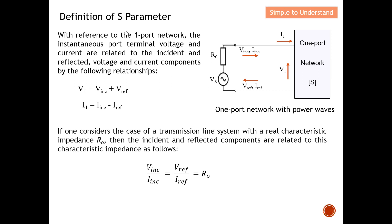Now we come to the one-port network. This diagram shows the one-port network with the instantaneous port terminate voltage and current. The terminate voltage and terminate current are related to the incident and reflected voltage and current components. The terminate voltage is simply the sum of the incident wave voltage plus the reflected wave voltage. For current, since the current flows in different directions, the terminate current I1 equals the incident current minus the reflected current.